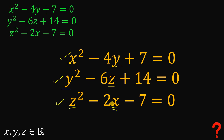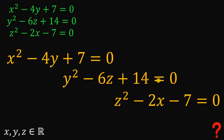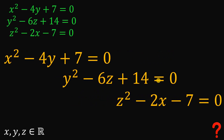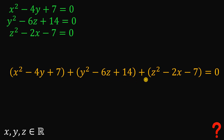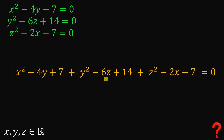So how do we solve the values of x, y, and z that satisfy these equations? The only way is to combine all three equations. If we do that, we get: x squared minus 4y plus 7, plus y squared minus 6z plus 14, plus z squared minus 2x minus 7, equals 0. We can remove the parentheses since the operation is just addition.